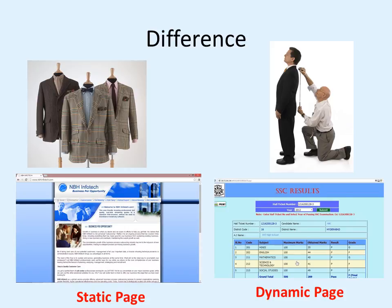Now let us look at the difference between static and dynamic pages. Static pages are just like ready-made pages — if you take a ready-made dress, like a size 42 shirt, the fitting of that shirt will always be the same from the same brand. Whereas with a tailor-made shirt, the tailor takes the measurement and stitches the dress accordingly, so the fitting changes. Similarly, in static pages the contents remain always the same, and in dynamic pages the contents may change depending on the parameters given — like the roll number in our example.